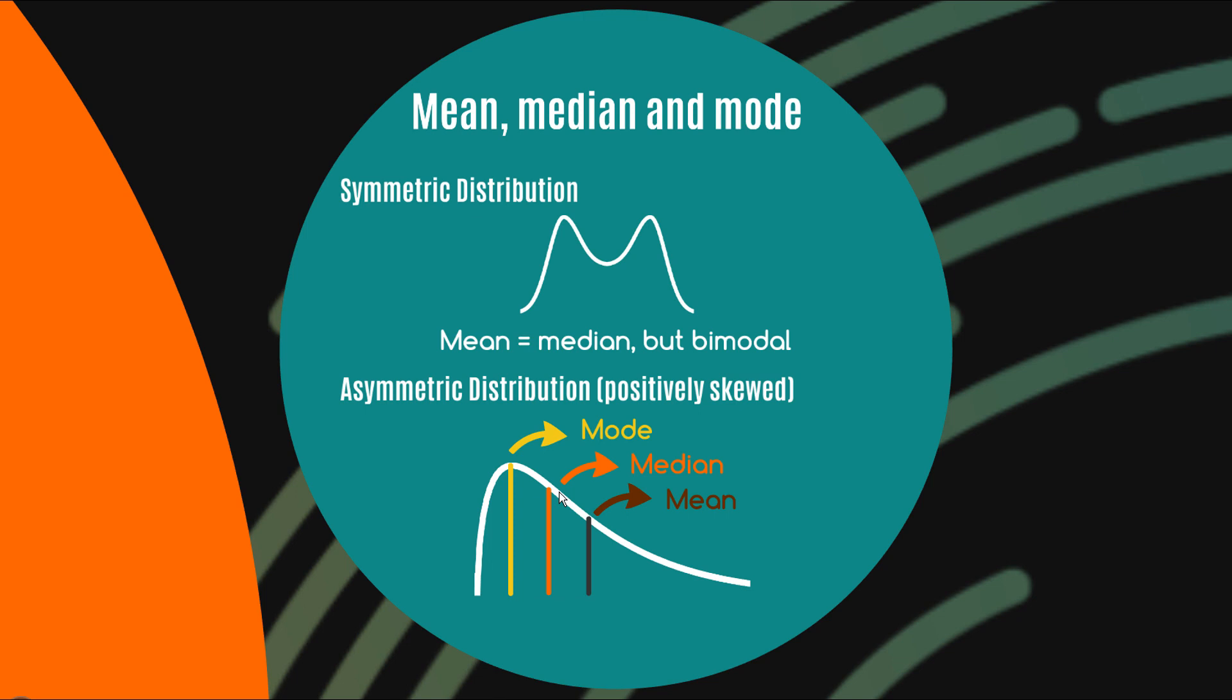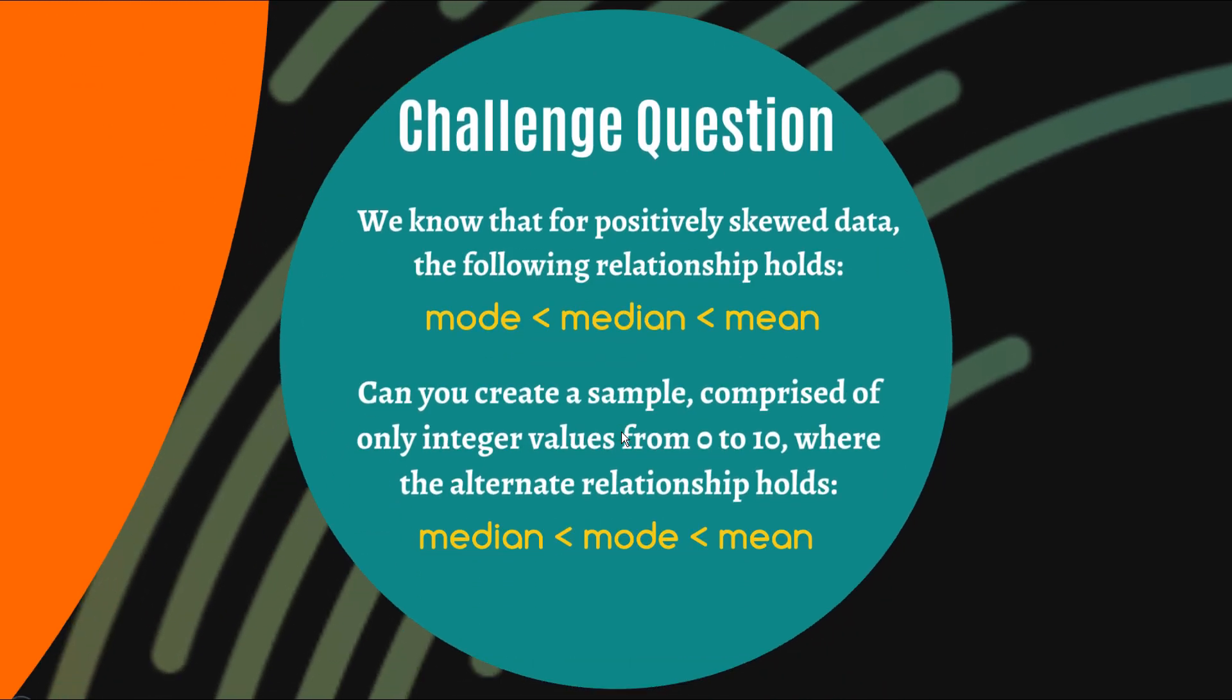And in this case, all three measures are totally appropriate in their own way. It depends what you're kind of measuring in particular. You might use the median when you're dealing with things like income or house prices or things like that, but the mean might be useful in other situations too, and same with the mode. It really depends on the context. So here's my challenge question to you, and this one's really tough.